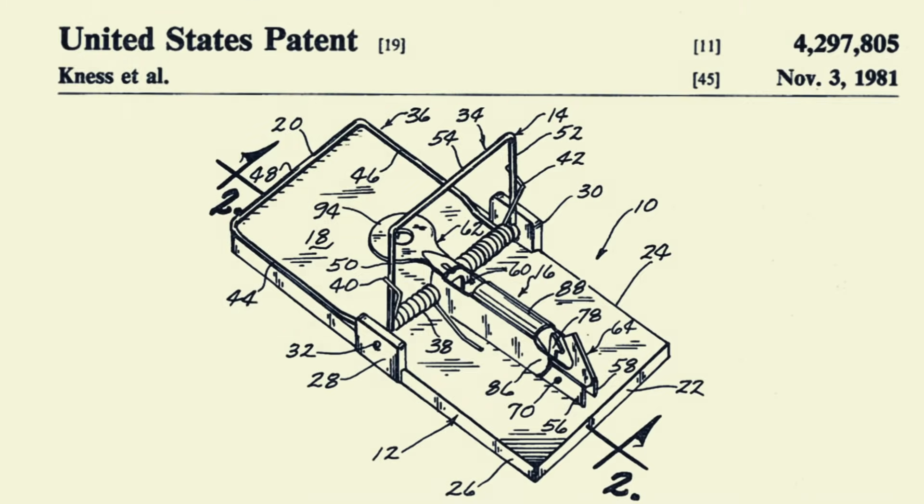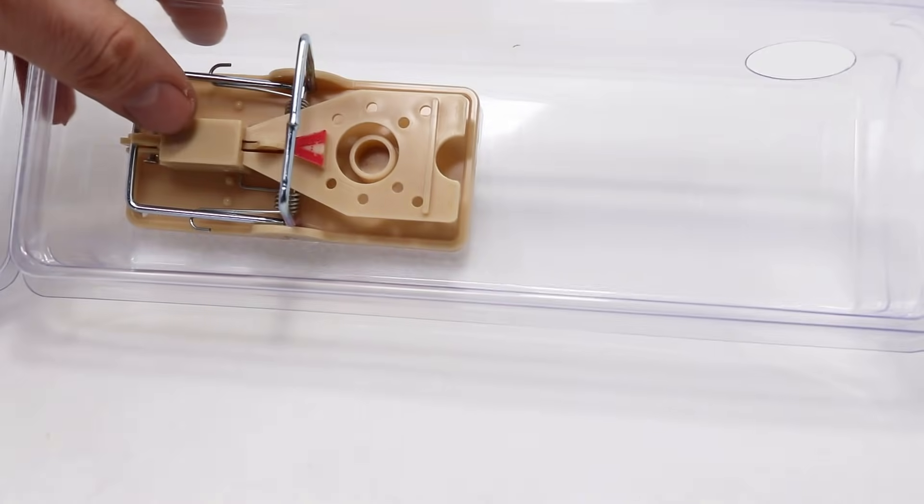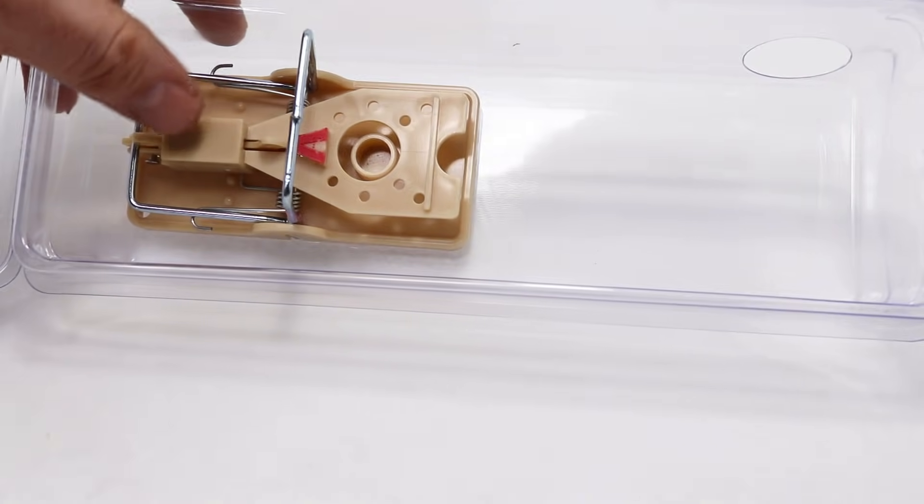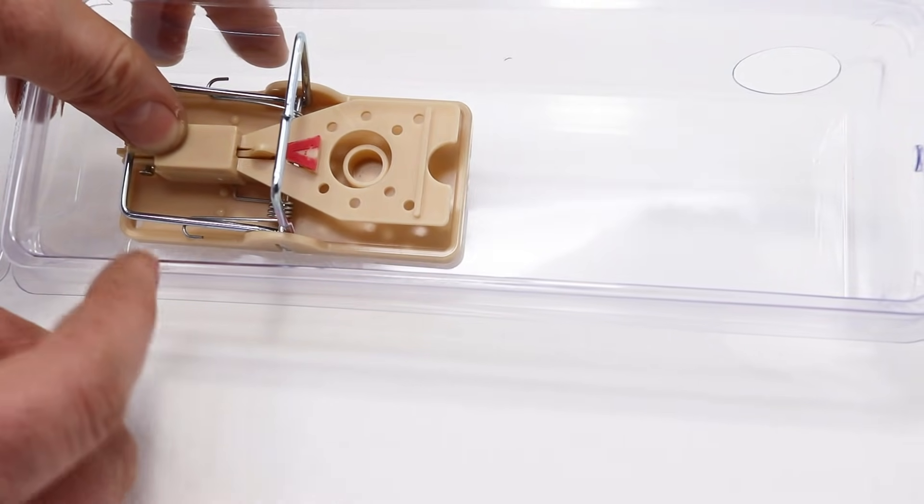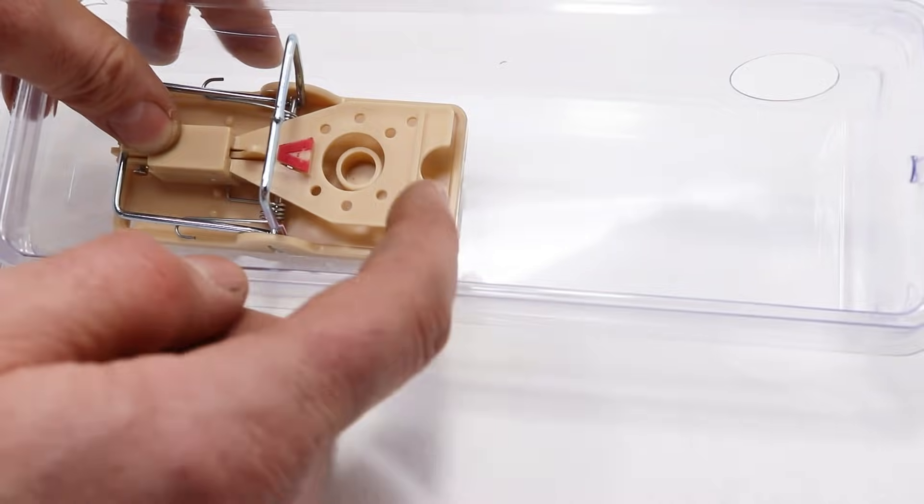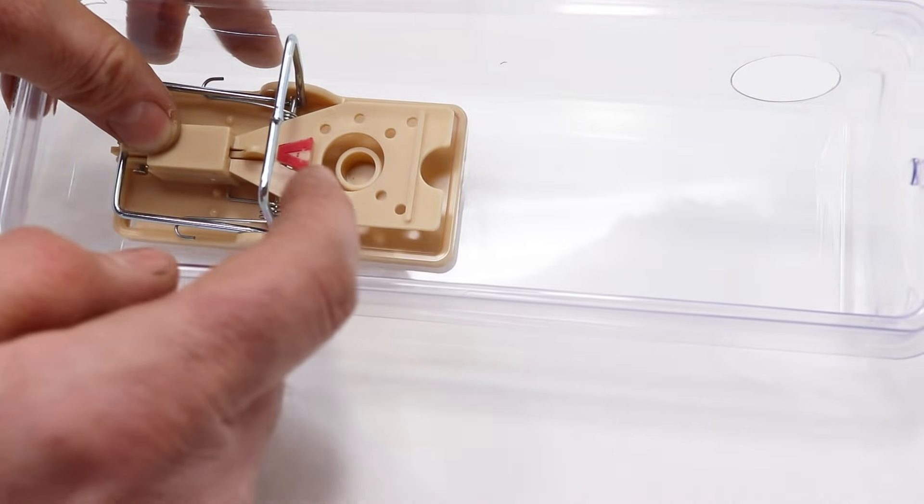And it was first patented when I was just one month old on November 3rd, 1981. So it's been around for 37 years and it's still being sold, that's a good design. Now this plastic box protects the trap. The mouse can't enter from the side or back, it has to come in through the holes, down and hit that trigger. Right in the kill zone.